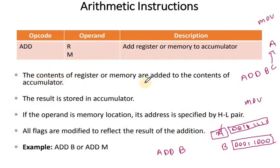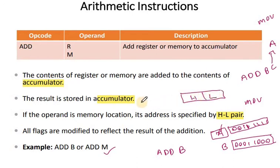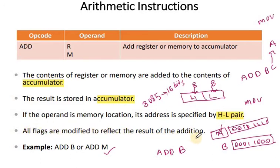The contents of a register or memory are added to the contents of the accumulator, and the result is stored back in the accumulator. For the ADD M instruction, a memory operand is added to the accumulator. The memory address is specified by the HL register pair — because in 8085 architecture, addresses are 16 bits, so H holds the high 8 bits and L holds the low 8 bits. All flags are modified to reflect the result of the addition.